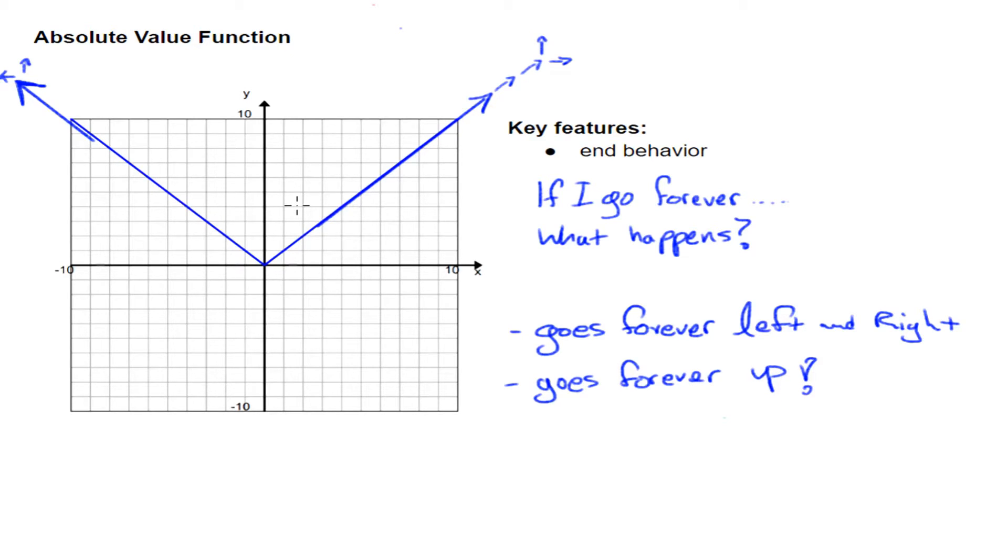This would be different if I have this different graph here, different absolute value. Now, this one would be going forever down, forever left, forever down, forever right. So, it would be a little bit different, but you can see the general picture. We're going to be going up or down forever, and we're going to be going left and right forever.